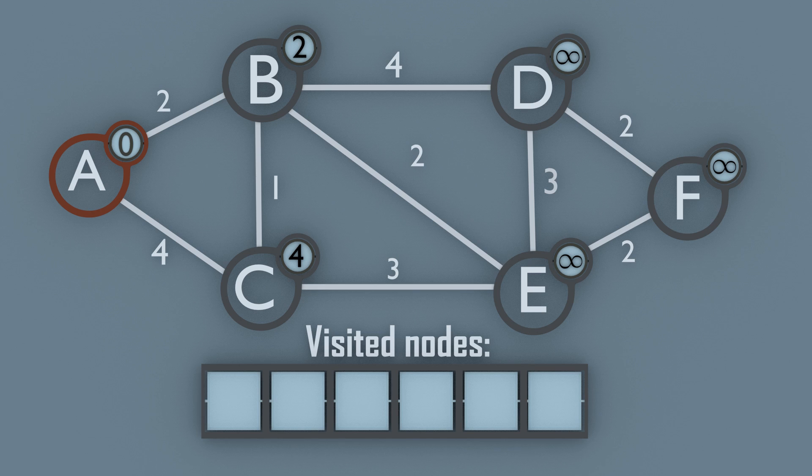Now we set node A as a visited node and move to node B. We start by comparing the distance to node D to the weight of node D. Since 6 is less than infinity, the weight of node D is changed to 6.